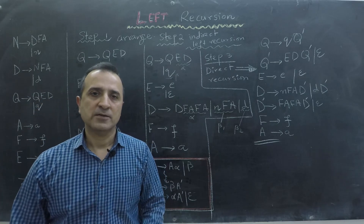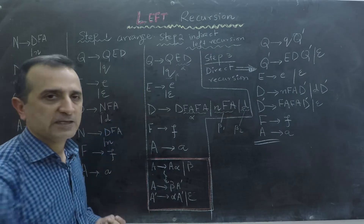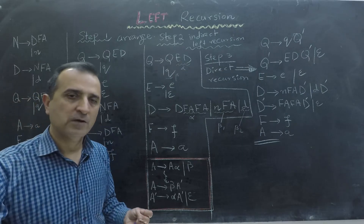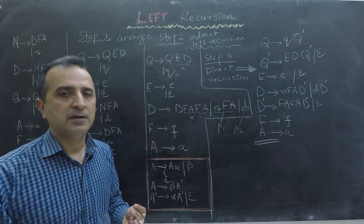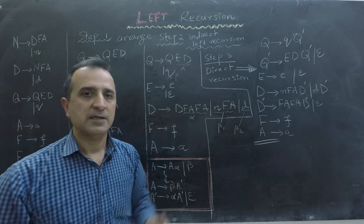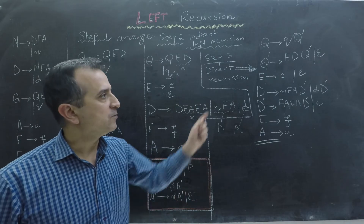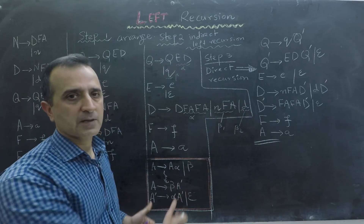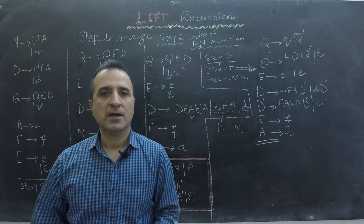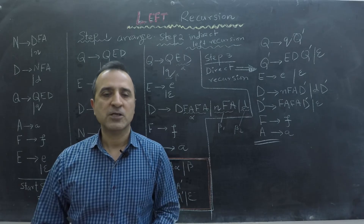To summarize the three steps to eliminate left recursion: first, rearrange the context-free grammar in terms of dependencies of productions. Second, ignore direct left recursion but eliminate indirect left recursion by substitution. Third, now that the grammar has no indirect left recursion but only direct recursion, remove all direct recursion using the simple formula. I hope you were able to understand this video clearly and can now remove left recursion in any kind of grammar. If you still have questions, please ask. See you in the next video.